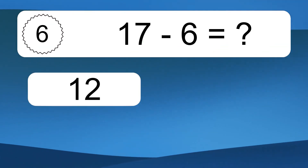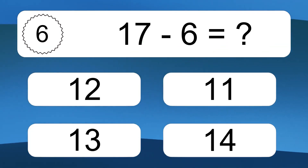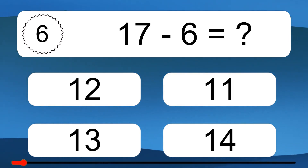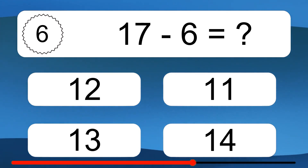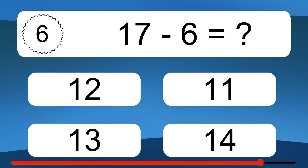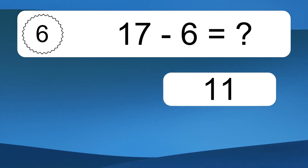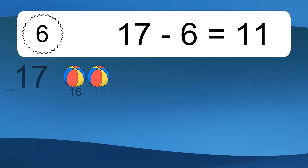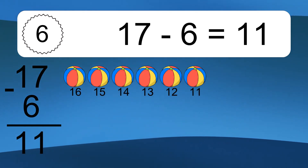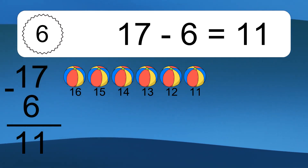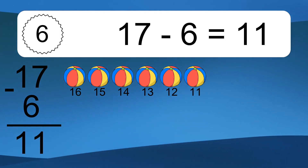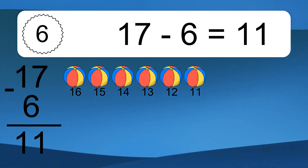17 minus 6 equals what? 17 minus 6 equals 11. Let's count it: 16, 15, 14, 13, 12, 11.